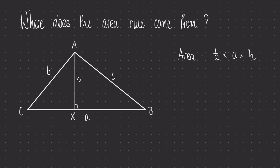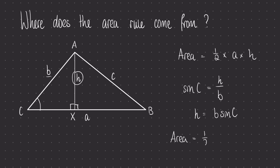We look at this triangle on the left and we see that this is in fact a right-angled triangle as well. I'm going to use this one because it makes the formula look a little bit nicer at the very end. So we have angle C, the opposite side h, and the hypotenuse b. In order to find h we use sine of C is equal to the opposite h over the hypotenuse b. Rearranging to make h the subject, h is b times by sine of angle C. Going back into the area equation and replacing the perpendicular height h, we find that the area is a half times by a times by b sine C.